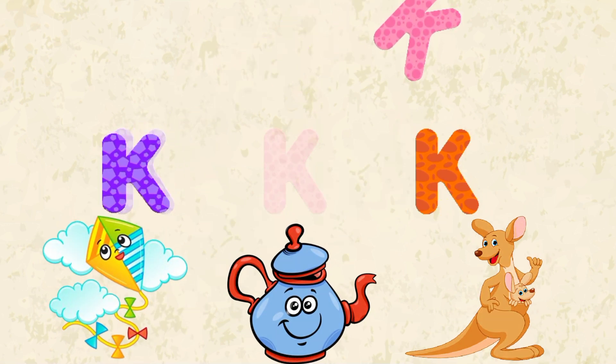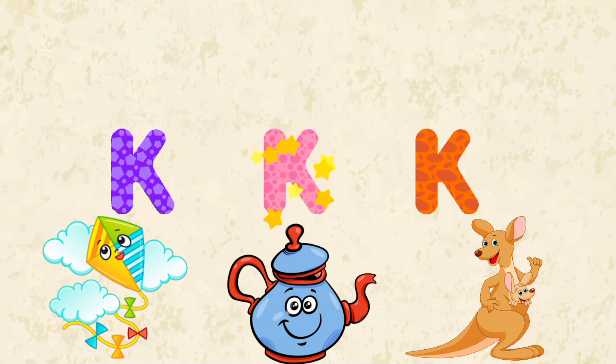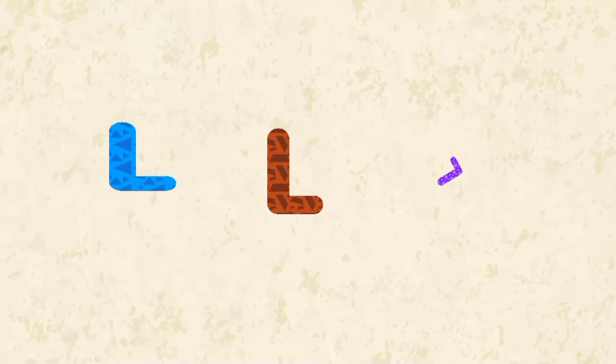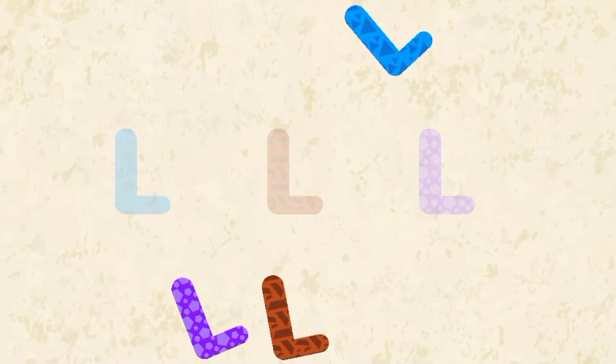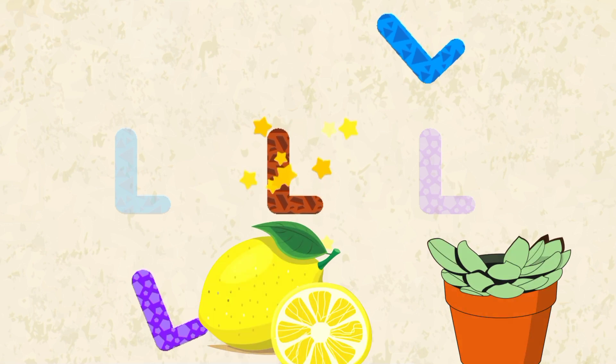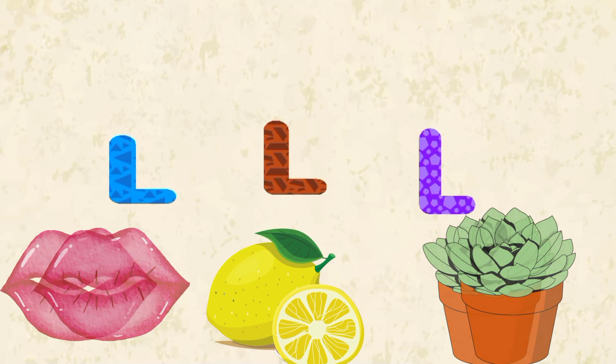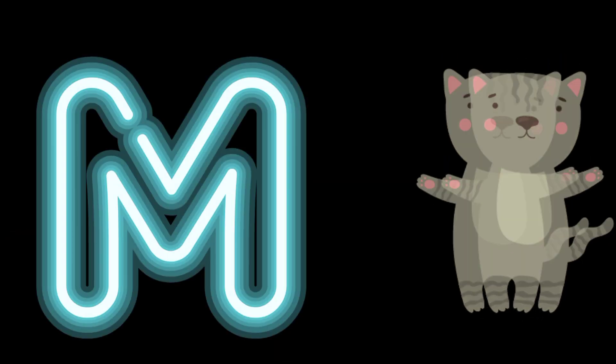Letter K. K for Kite, K for Kettle, and K for Kangaroo. L. L for Lion, L for Lemon, and L for Leaves.